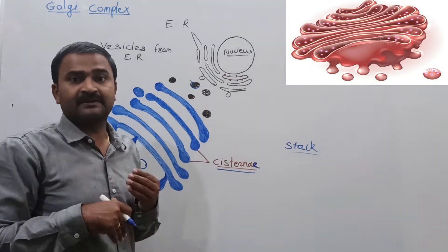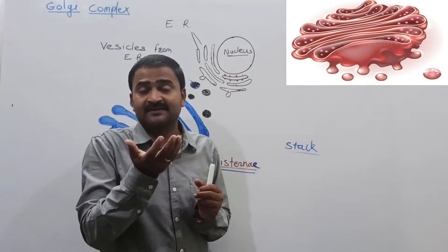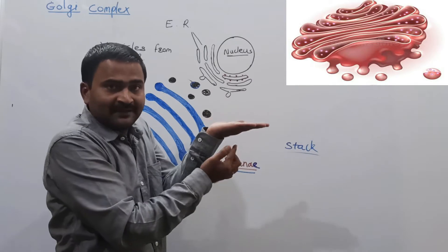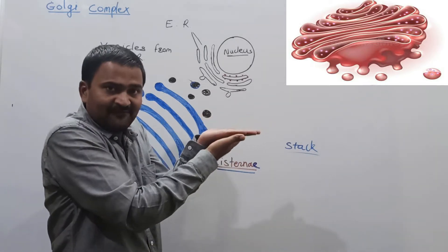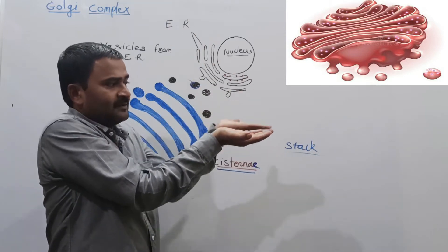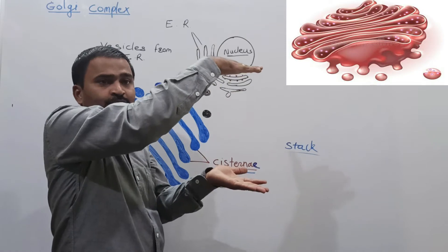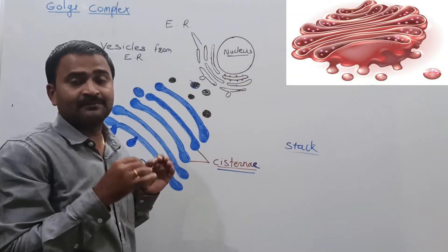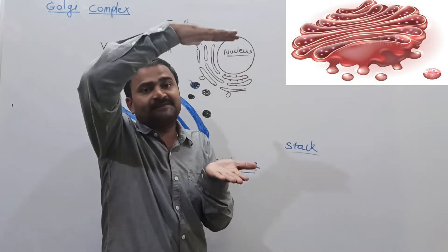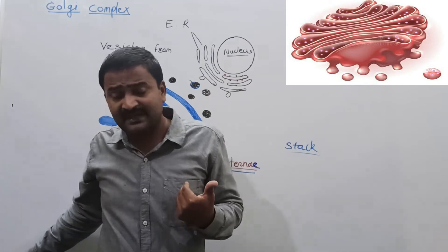The singular form is cisterna. Cisterni are flat, disc-shaped sacks. Imagine one flat disc — that is one cisterna. Then another flat disc is placed over it, and so on, forming a stack. That stack is the Golgi apparatus. It mainly contains a stack of flat disc-like sacks called cisterni.